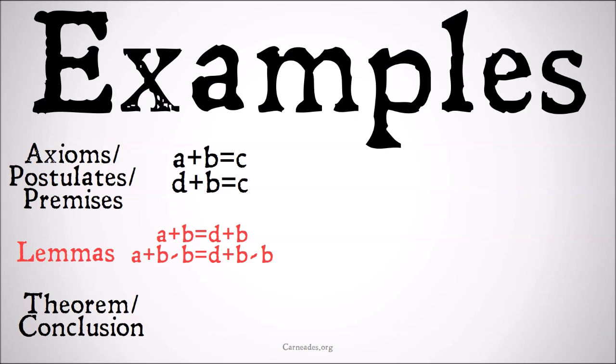We could have some lemmas such as: because they both equal c, we can set them equal to each other. So we get the lemma a + b = d + b. Then we can subtract b from both sides: a + b − b = d + b − b. And so we can conclude what we were trying to conclude all along, which is that a = d.